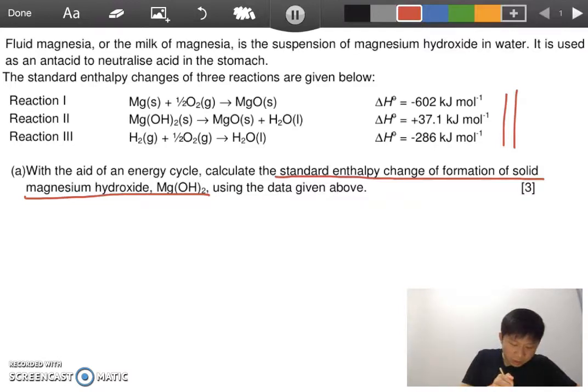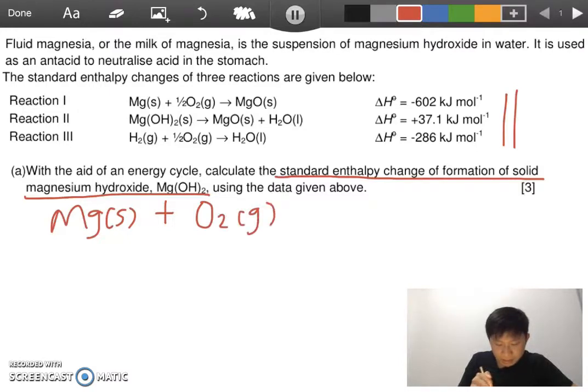So we write it down in the equation. Over here is magnesium solid, because formation means the elements in their standard states, plus oxygen gas, plus hydrogen gas, and then it gives you the solid magnesium hydroxide.